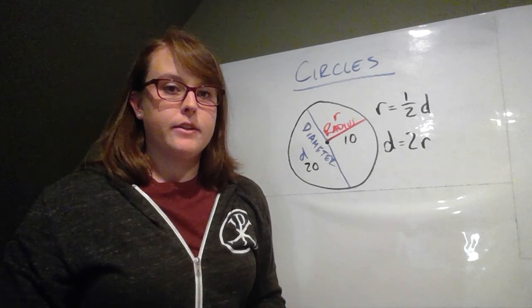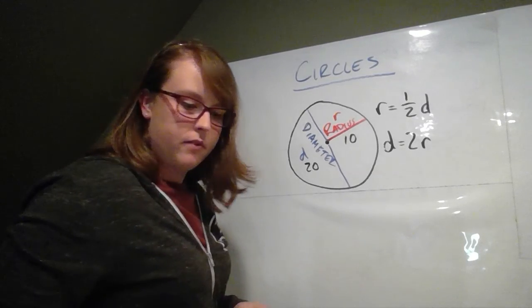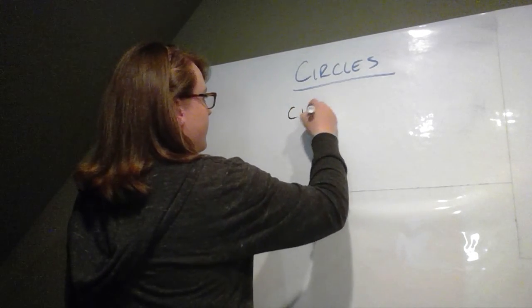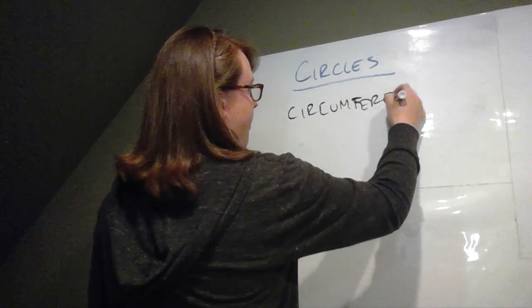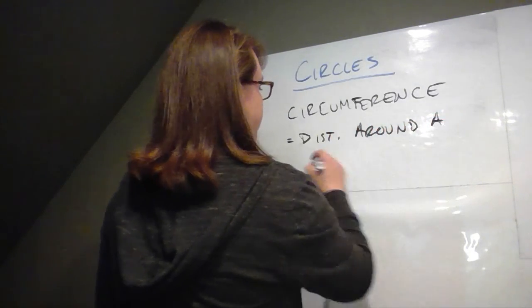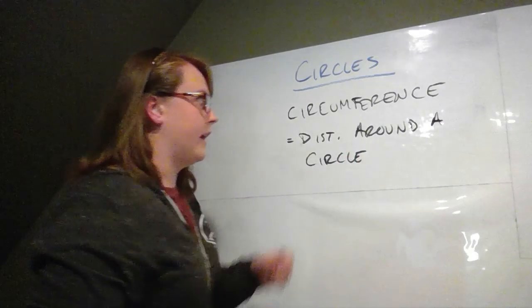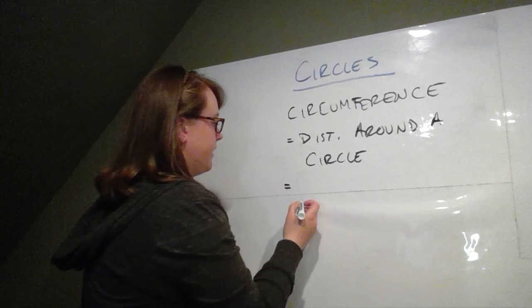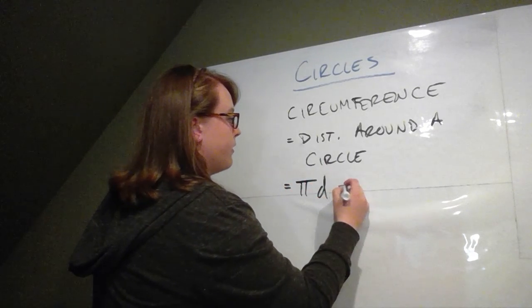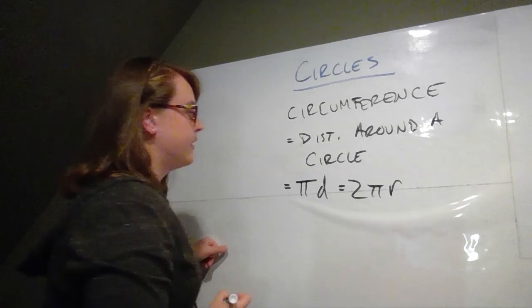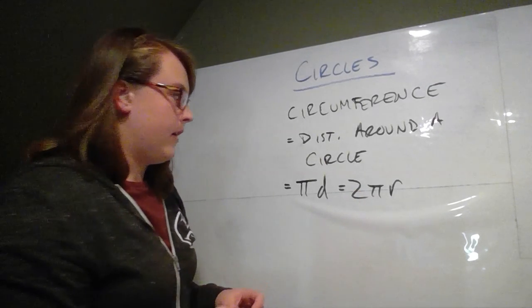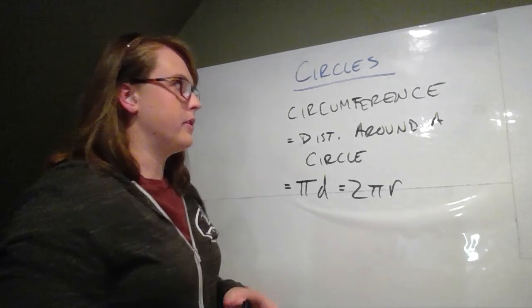Now let's talk about circumference. Circumference is the distance around a circle. The way that you calculate the circumference — there are two different equations you can use, and one comes from the other. You can use pi times the diameter, or you can use 2 pi times the radius. Either way works, because the radius is just half of the diameter, so if you multiply it by 2 it makes it a diameter. These are the important equations you're going to want for circumference.